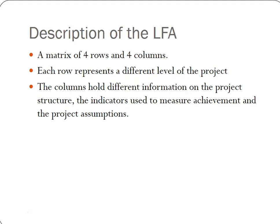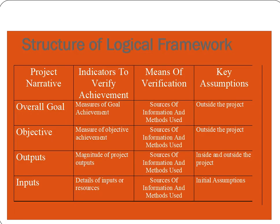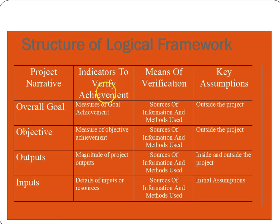As you saw on the diagram earlier, a logical framework is a 4x4 matrix. Each row represents a different level of the project: goal, objective, output, input. The columns represent different characteristics of each of those levels: the narrative, the indicators, the means of verification, and the project assumptions. Sometimes people refer to these as indicators of success and then means of verification or means of evaluation.